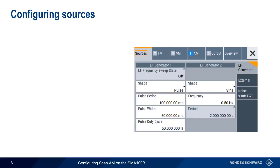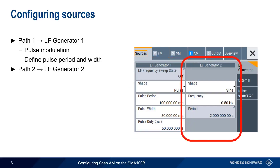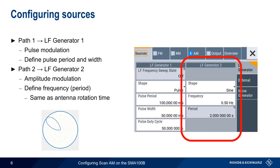Since we're using the SMA's internal LF generators for both paths, the next step is configuring the parameters for both generators. Path 1 is using LF Generator 1 to create the pulse modulation, so here we define pulse period and pulse width. On path 2, we're configuring the amplitude modulation, so we need to define the frequency or the period. Note that the period is usually the same as the antenna rotation time. For example, here our frequency is 0.5 Hz, which simulates an antenna that makes a full rotation every 2 seconds.